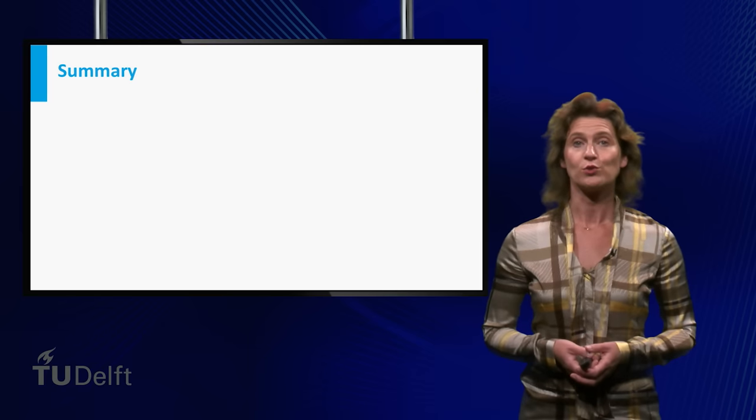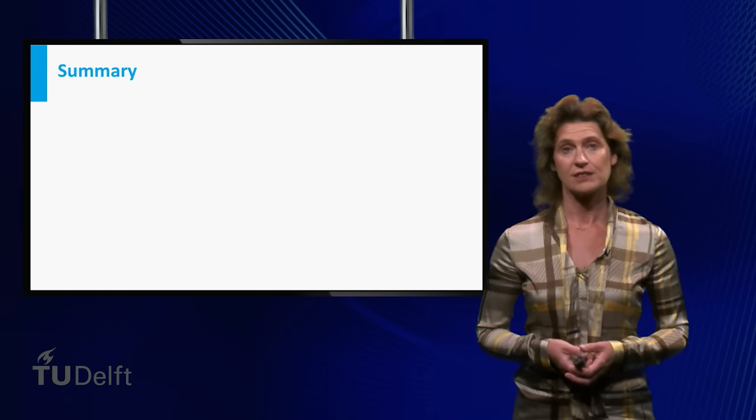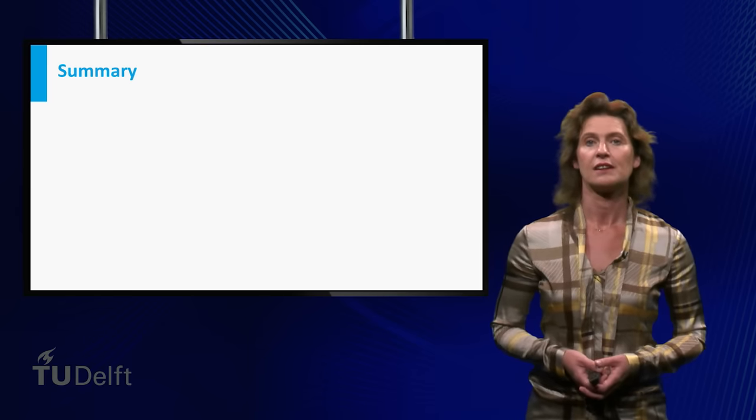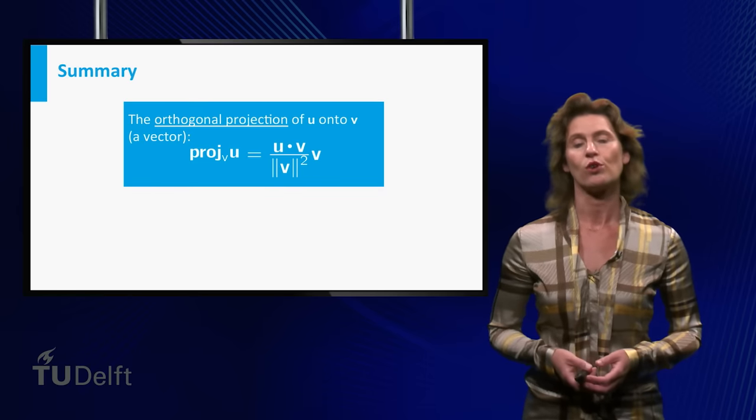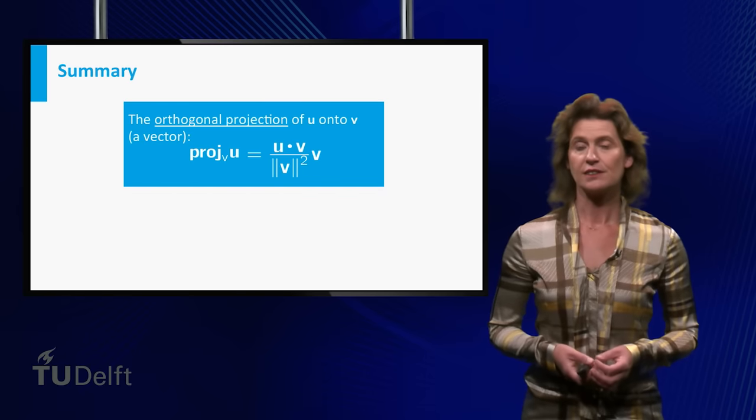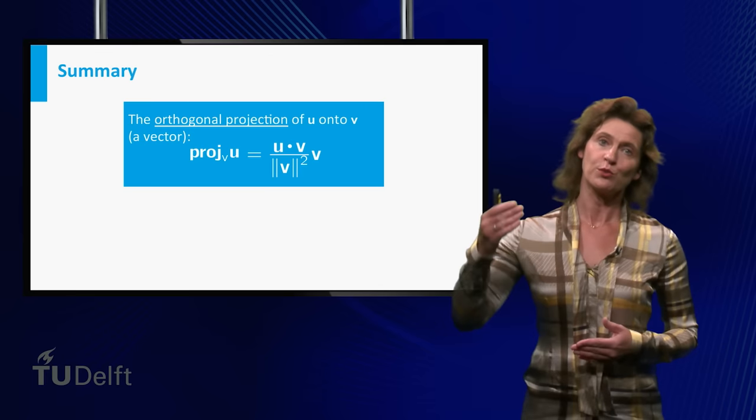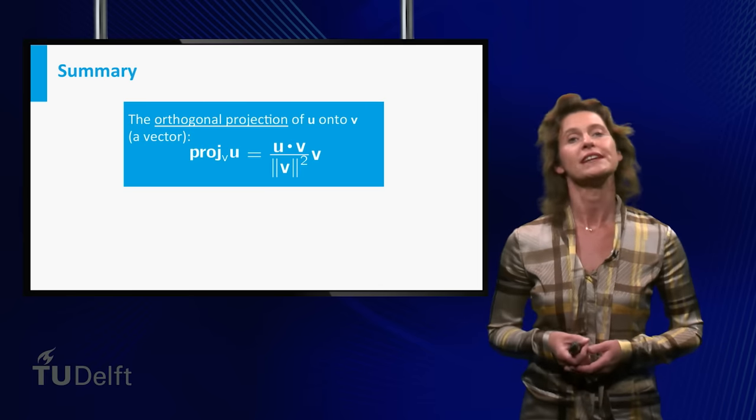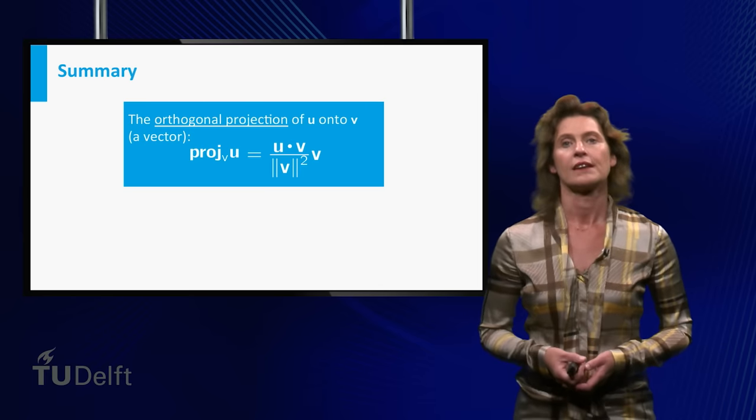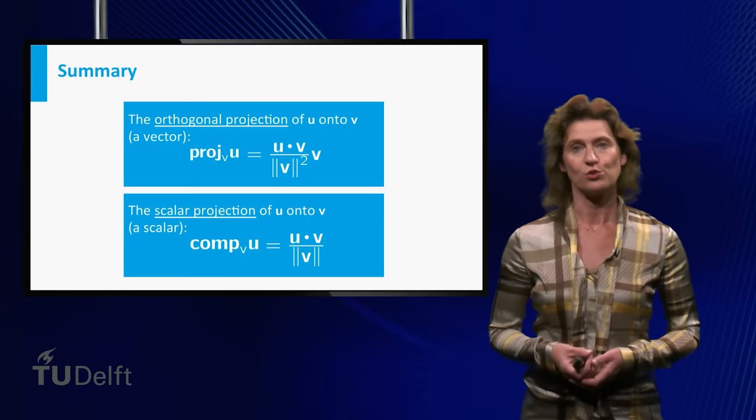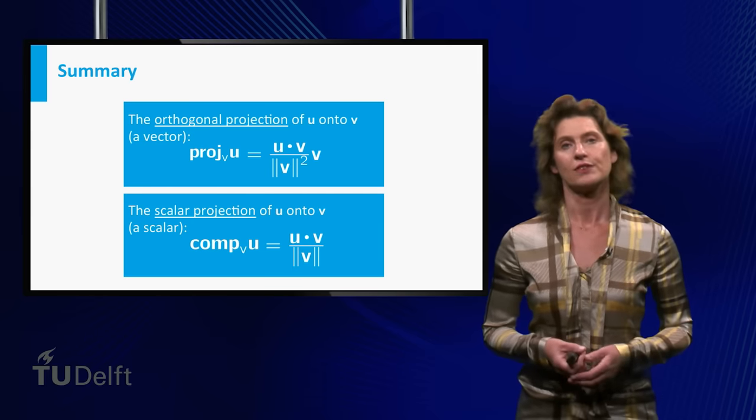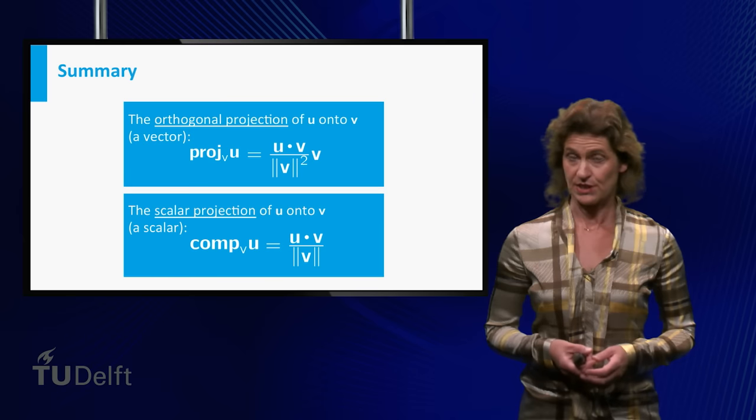You now know how to calculate orthogonal projections and scalar projections. The orthogonal projection of u onto v is a vector in the direction of v, which is the result of walking from u in a direction perpendicular to v. The scalar projection of u onto v is a scalar giving the signed length of the orthogonal projections.